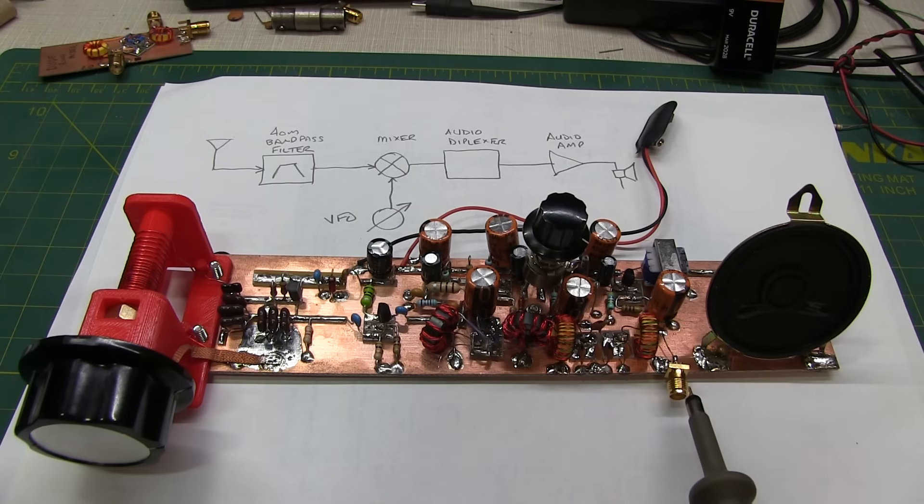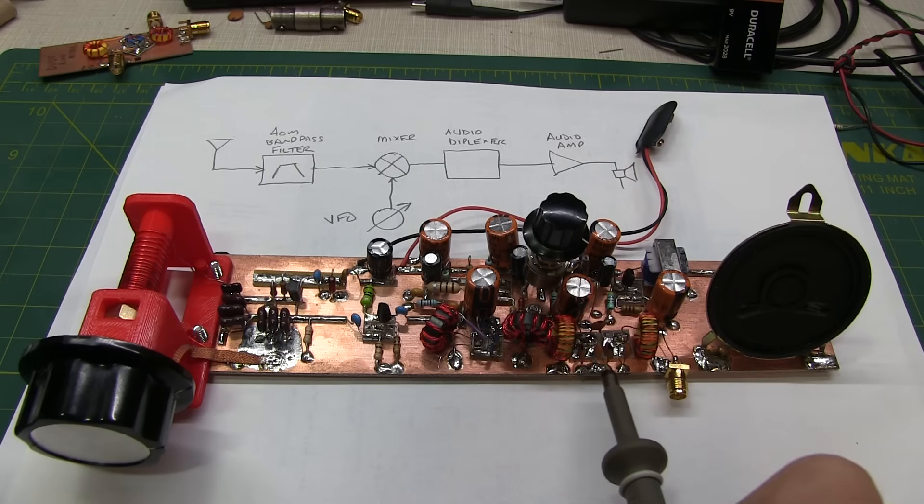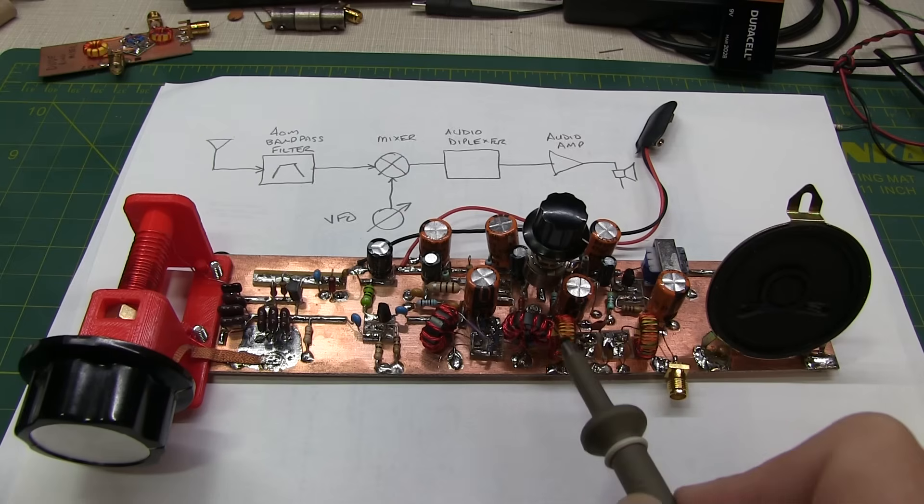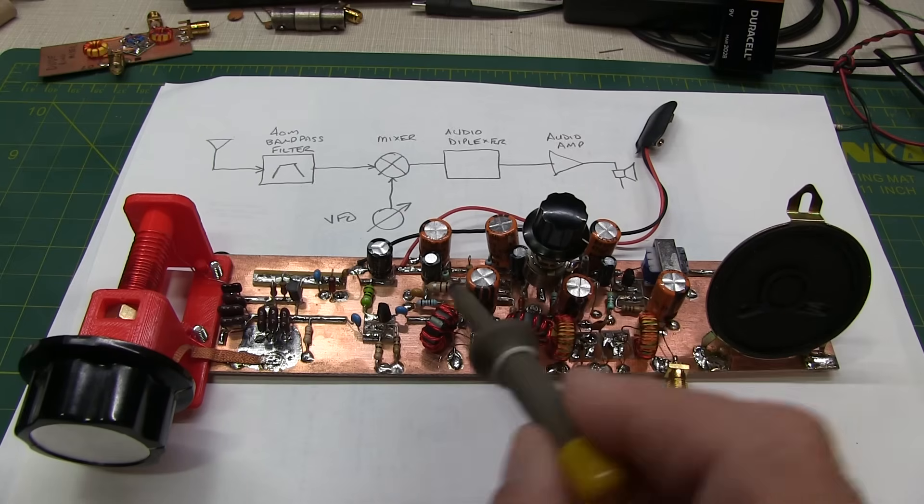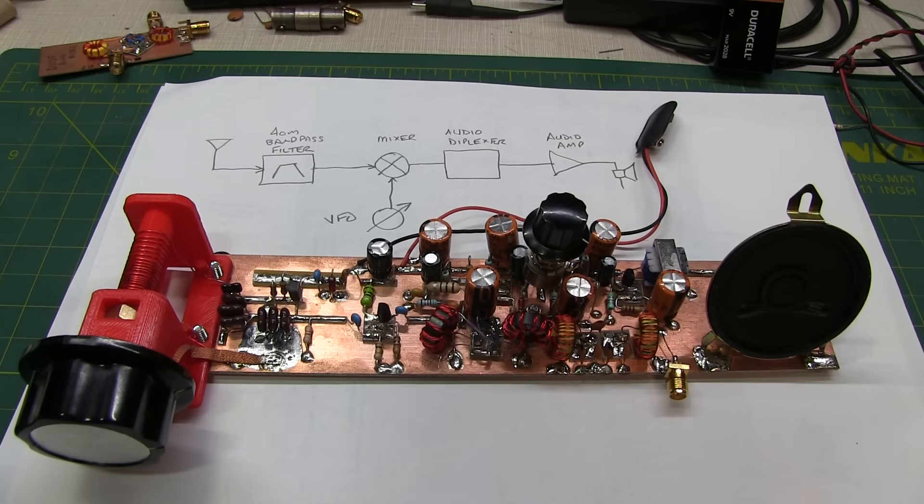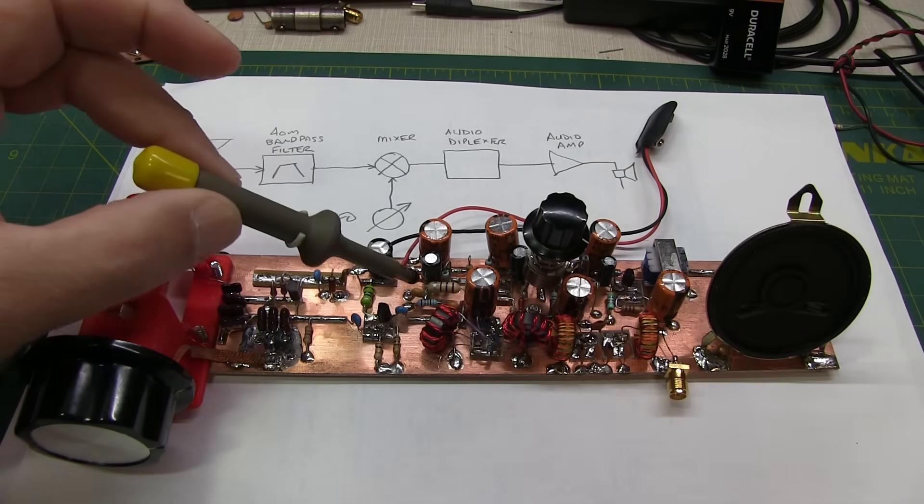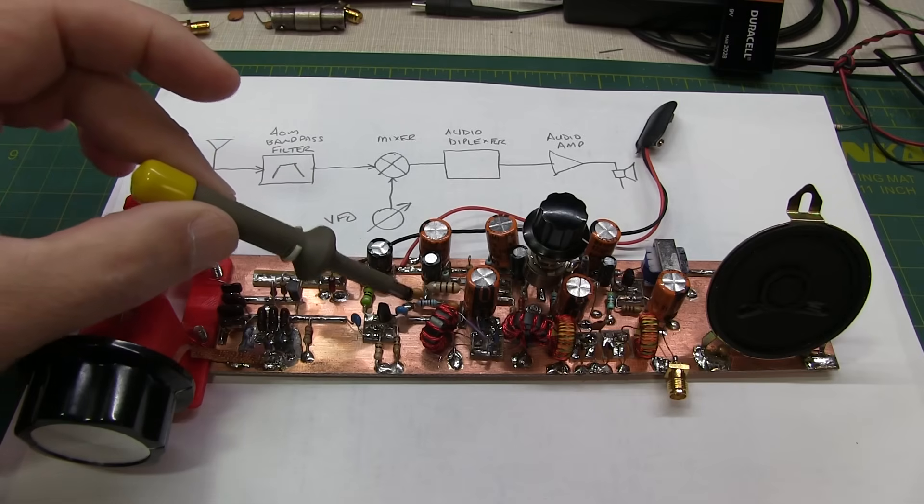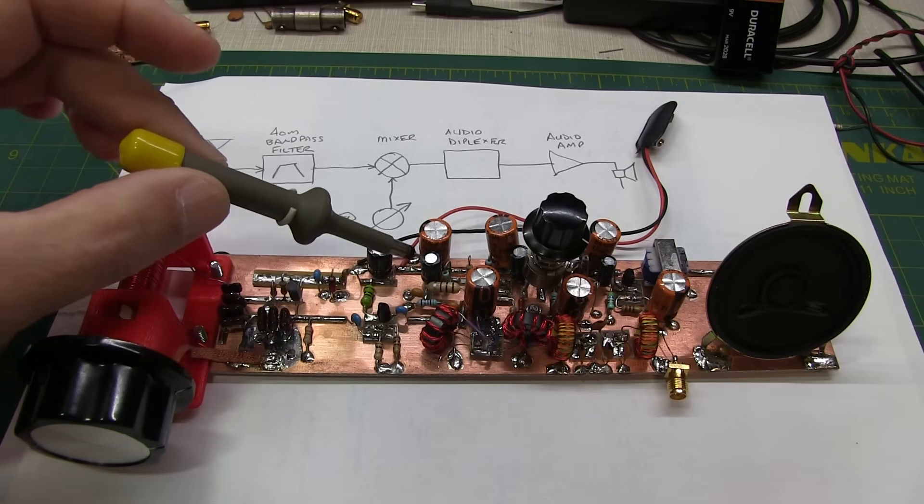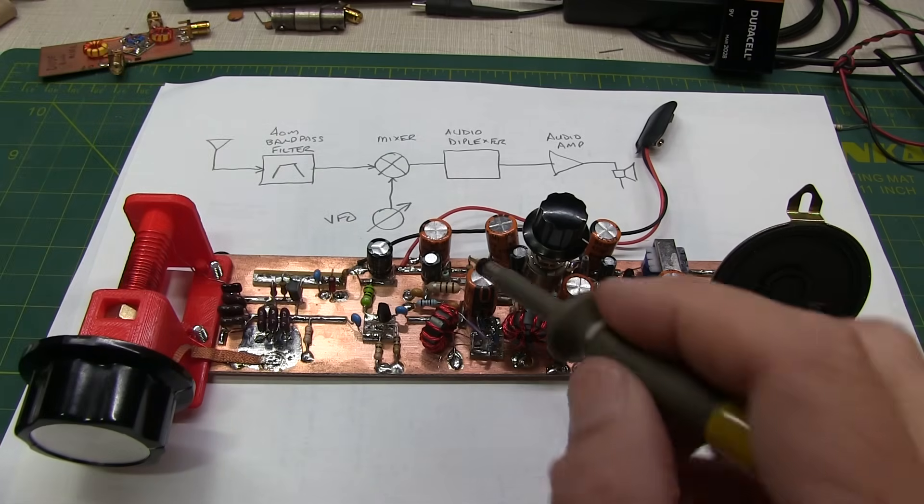Now over here is my antenna input. These two transformers and this network of capacitors is the 40 meter bandpass filter. So that's feeding into the other end of the mixer. The output of the mixer then couples up this way. The audio diplexer is right in here. You can see there's that 100 microhenry RF choke. There's the RF terminations. Then we're AC coupling into the audio amplifier stage.